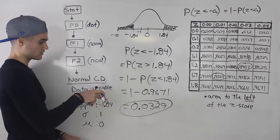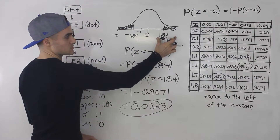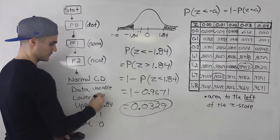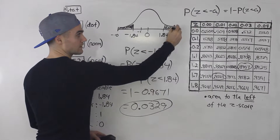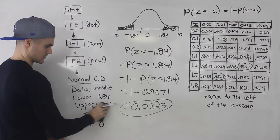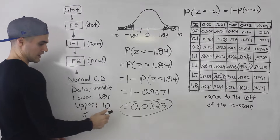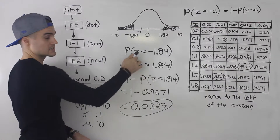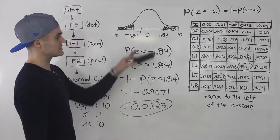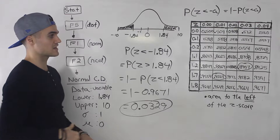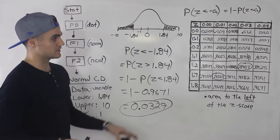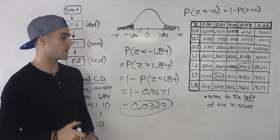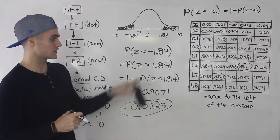If you want to see the symmetry at work with the calculator, you can verify it: put the lower bound as positive 1.84 and the upper bound as 10, and execute that — you get 0.0329 as well, because both areas are exactly the same due to symmetry. So that's how you deal with a negative z-value. The calculator is easy, but if you're only using a z-table with positive z-scores, it's a little tricky — you have to rearrange and get an equivalent expression.